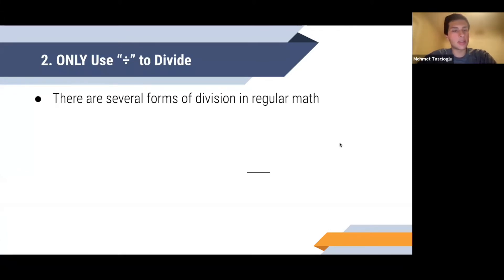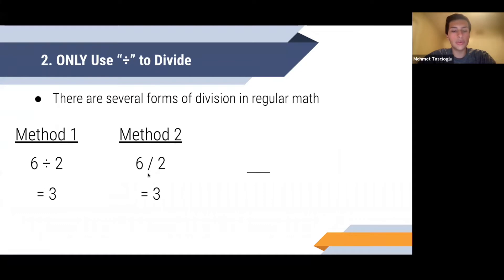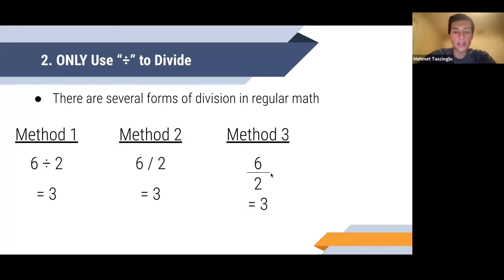The second difference is that you're only going to be using the division symbol to divide. Like multiplication, there are several forms of division in regular math. The first method is six divided by two using the ÷ symbol, which equals three. That is the standard symbol used in division. You can also write six slash two — the slash is used to represent division in regular math.